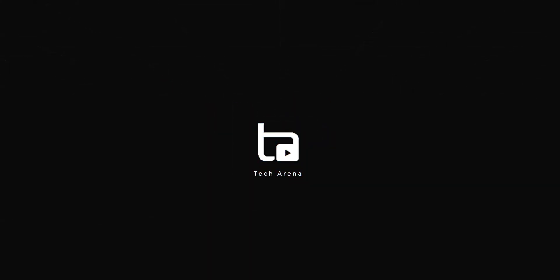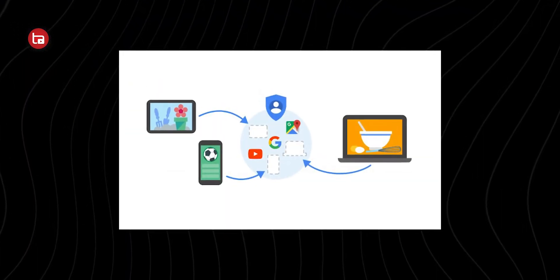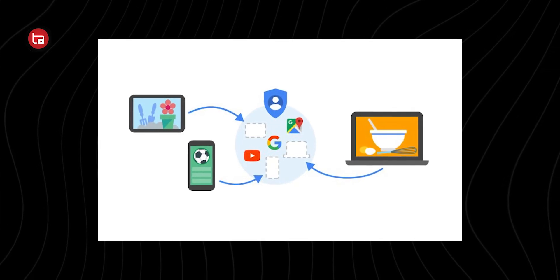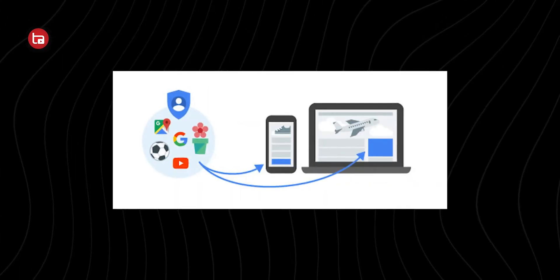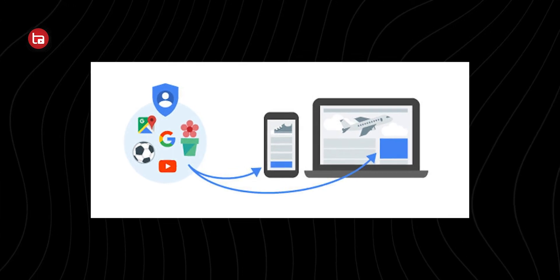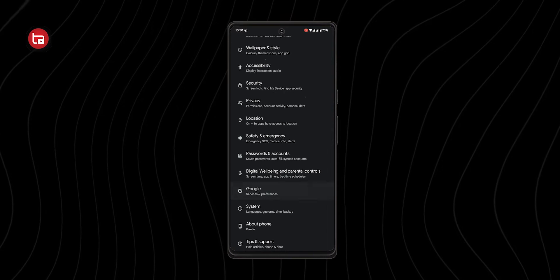Number one: opting out of Google ad personalization. Google keeps track of your search history, finds your interests, and based on that shows you ads. Have you ever noticed that when you search for a pen, ads for pens display all over your Chrome? That's because of Google's ad personalization.